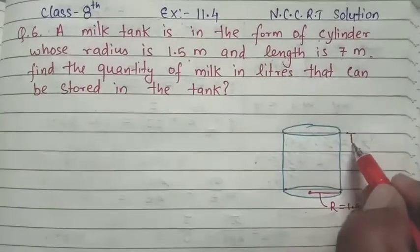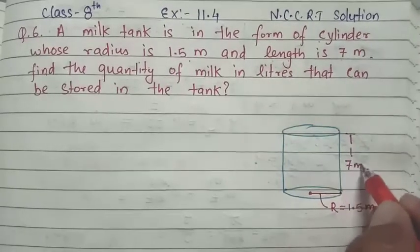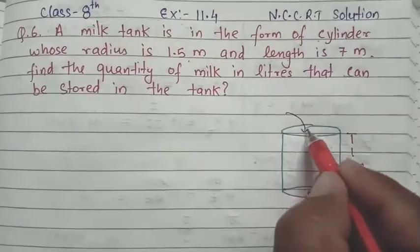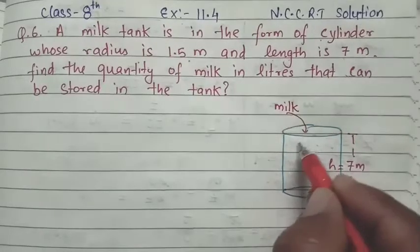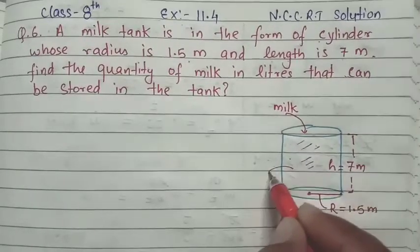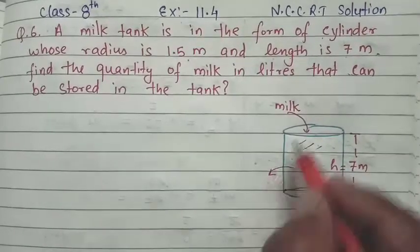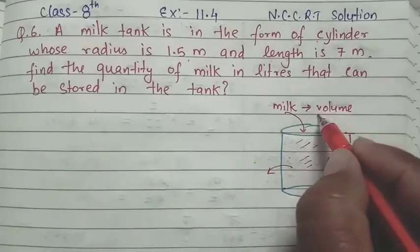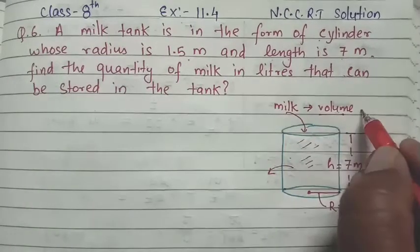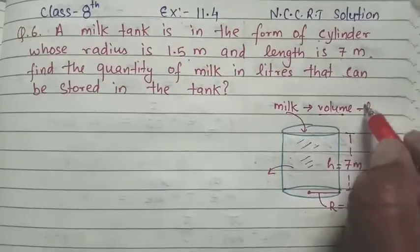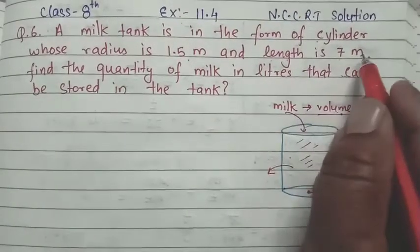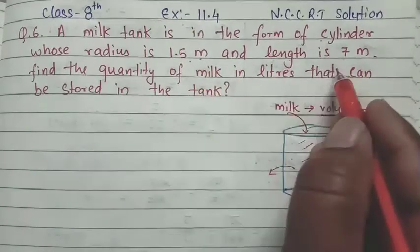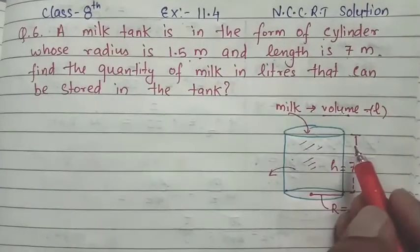Length means height, so this is 7 meters. How much milk can be stored means we need to find the volume. Since the radius and length are both in meters, our answer will come in meter cube. So now we find the volume, and then we find our answer in meter cube. We start the solution.